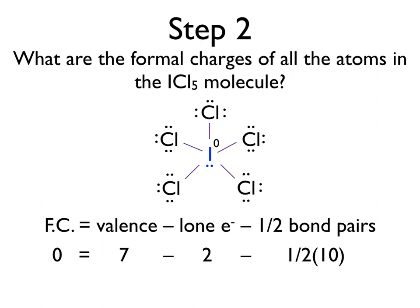Now we need to consider our chlorines. We'll note that each chlorine is equivalent, so the formal charge of one is the same as the formal charge of all of them. Like iodine, chlorine has seven valence electrons. It has three lone pairs, each with two electrons, giving six lone electrons. It has one bond to the iodine atom in the center with two electrons in it, so we take half of two. Seven minus six minus one equals zero — each chlorine atom also has a formal charge of zero.